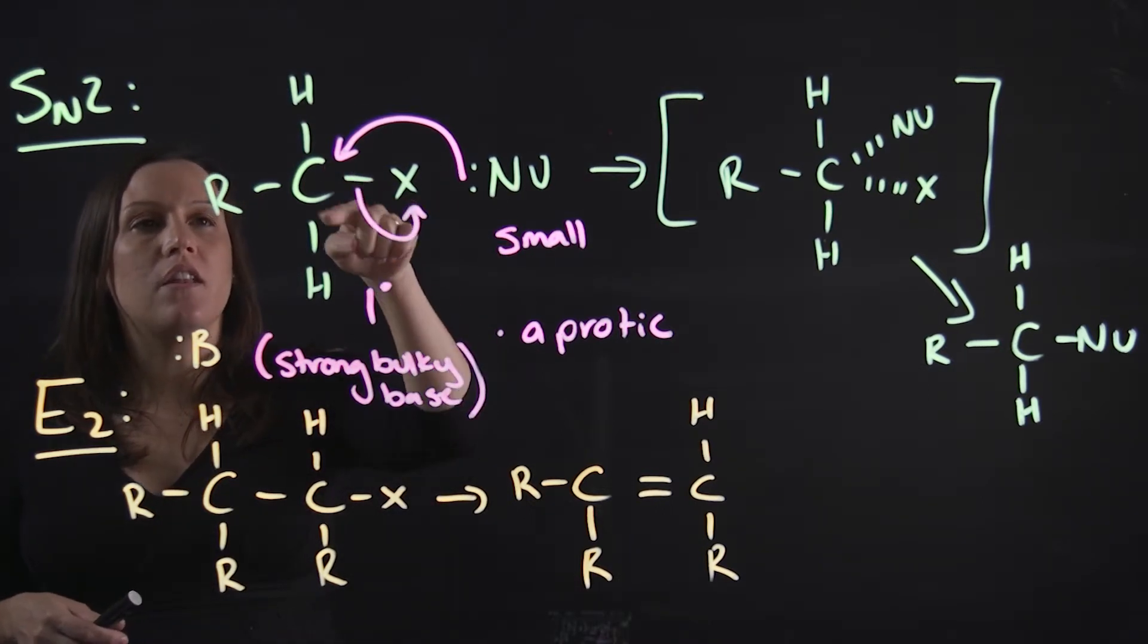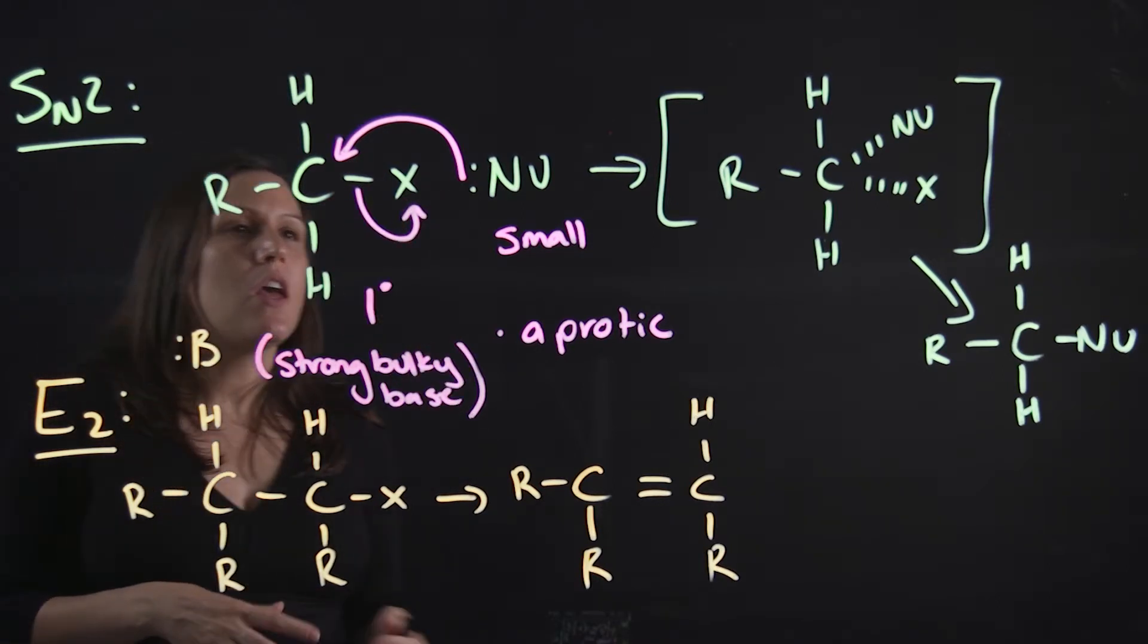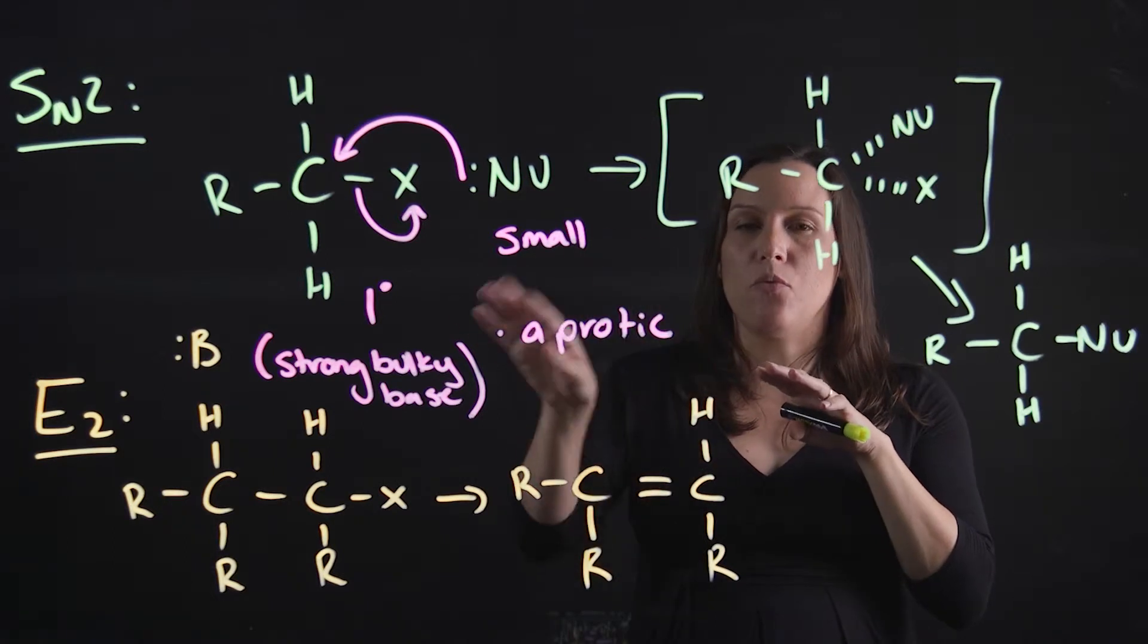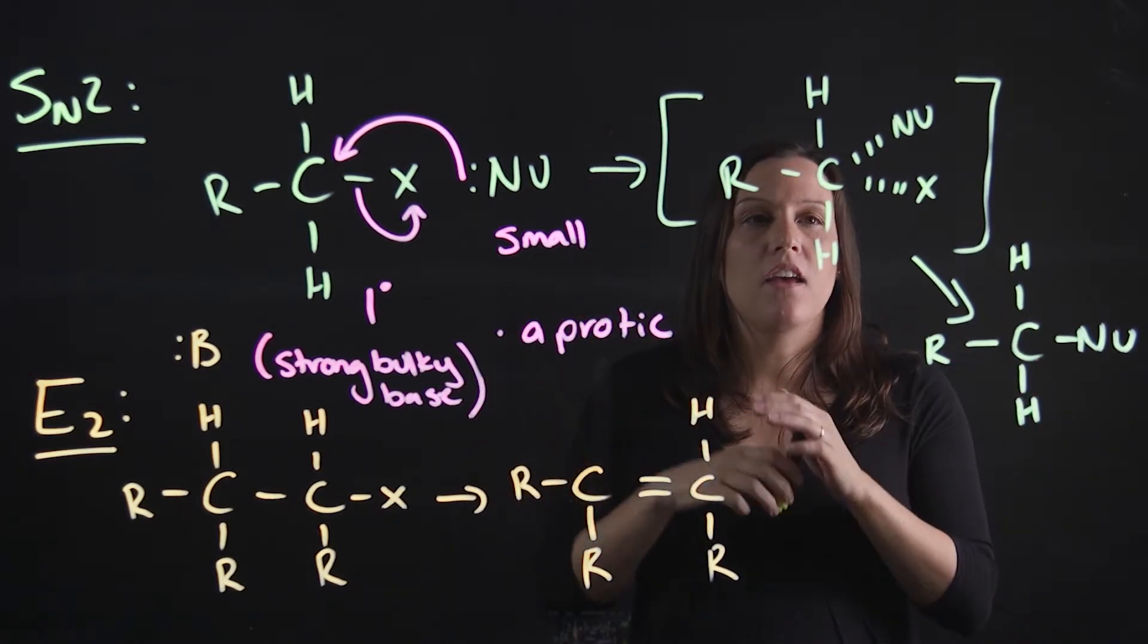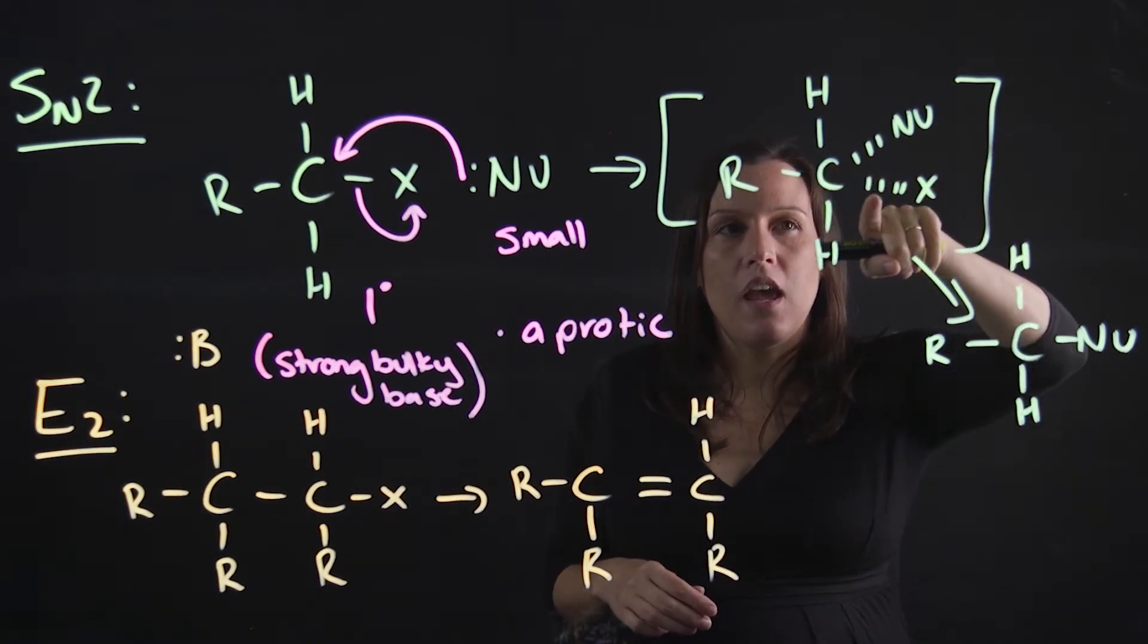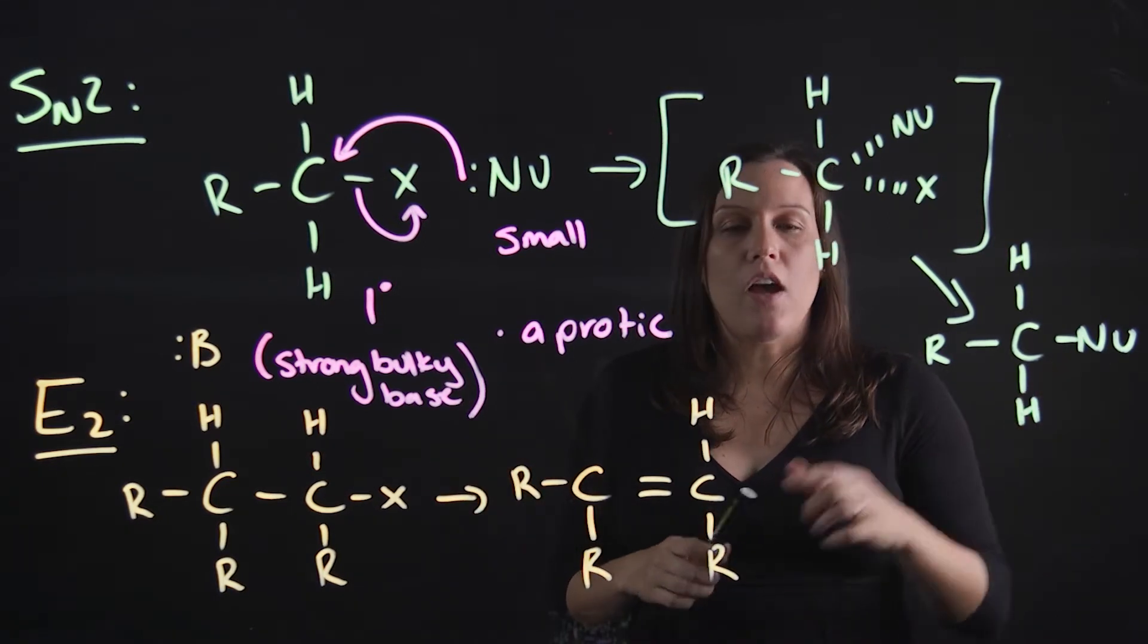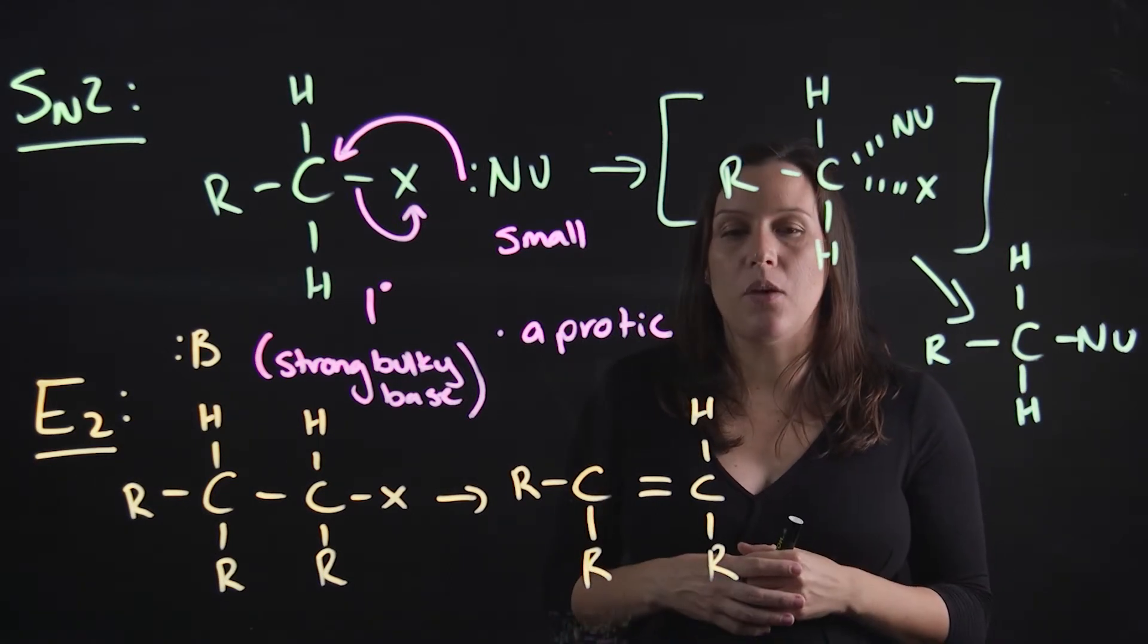So our small nucleophile, our easily accessible carbon, and our good leaving group. The nucleophile will come in from the opposite side, and the leaving group will come out the other side. So we've got what we call a backside attack. So what we're going to have here is we're going to have the nucleophile coming in and the other leaving group leaving at the same time.